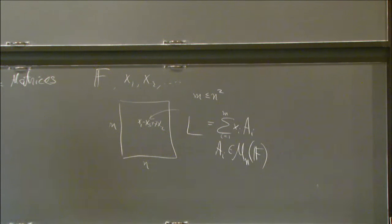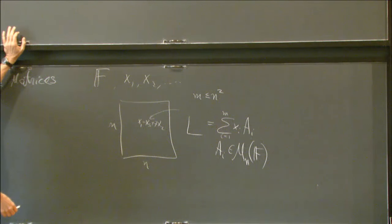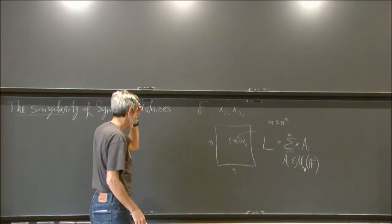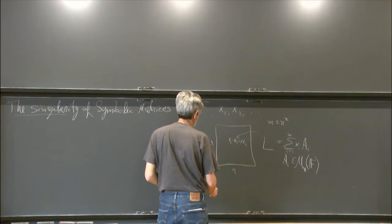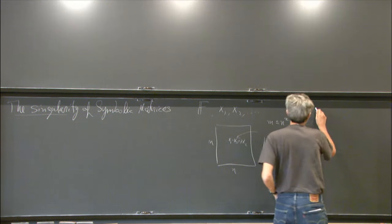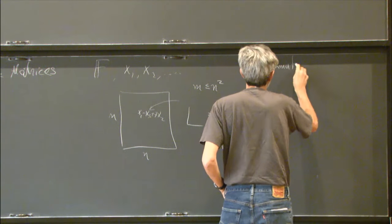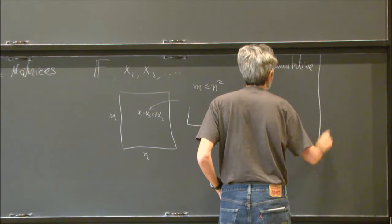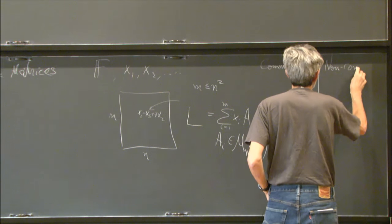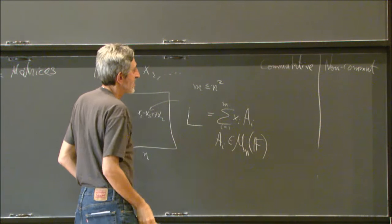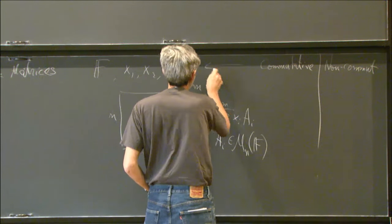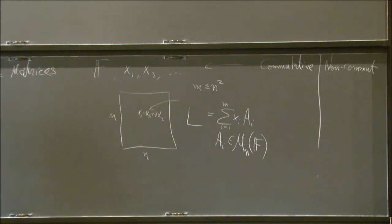What we want to know about such a matrix is whether it's singular or not. Singular over what? Here you see the dual lives and the interaction of two points of view — the commutative and the non-commutative — that is, whether the variables Xᵢ are taken to be commuting or non-commuting indeterminants.